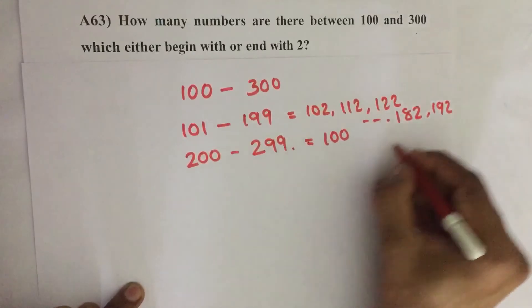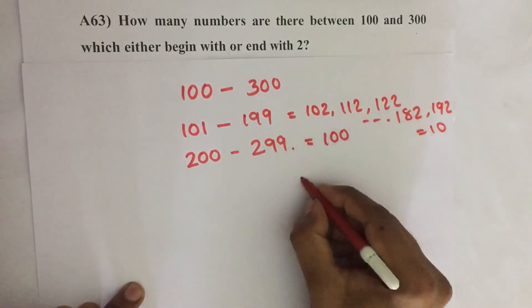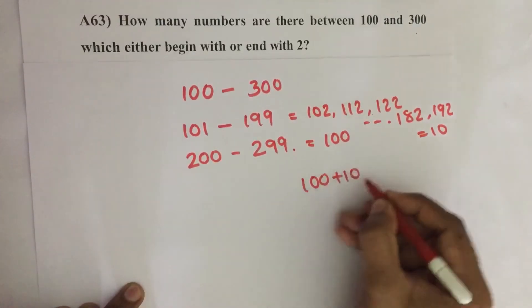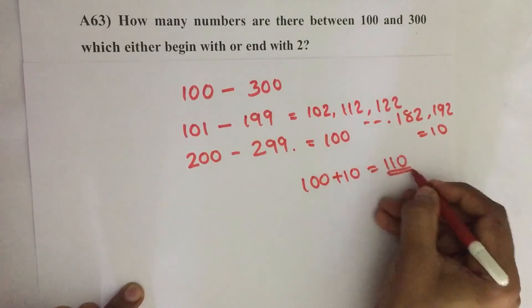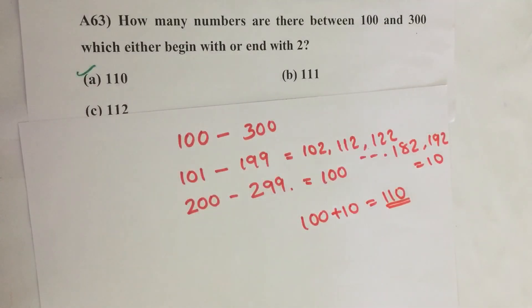Then total number is equal to 100 plus 10, we get 110. Our answer is option A, 110.